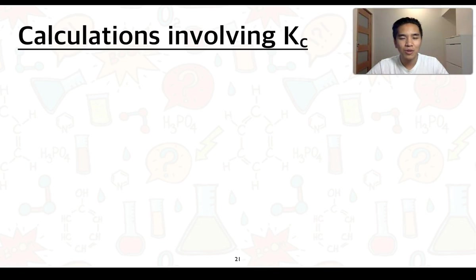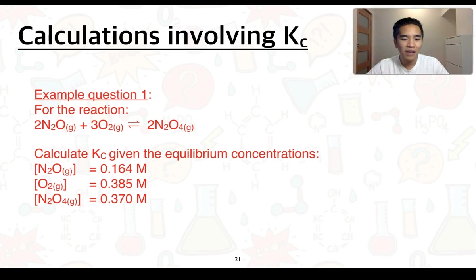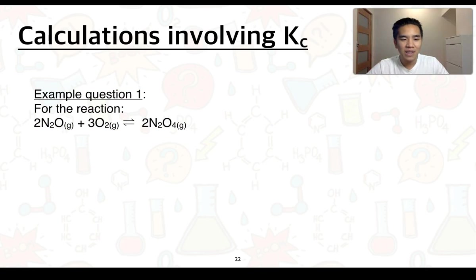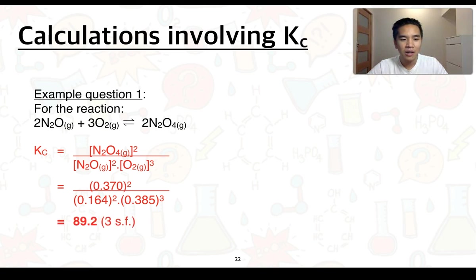For the calculations involving Kc, we'll work through three examples of increasing complexity. Example one: for the reaction given, calculate the Kc value given the equilibrium concentrations shown. We first write an equilibrium expression: Kc equals the concentration of N₂O₄ squared, divided by the concentration of N₂O squared multiplied by the concentration of O₂ cubed. Substituting in the equilibrium concentrations gives a value of 89.2 to three significant figures, indicating equilibrium heavily favors the product side.